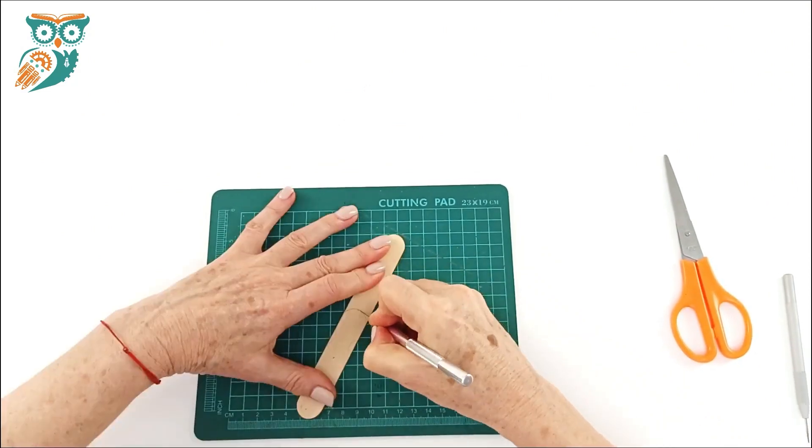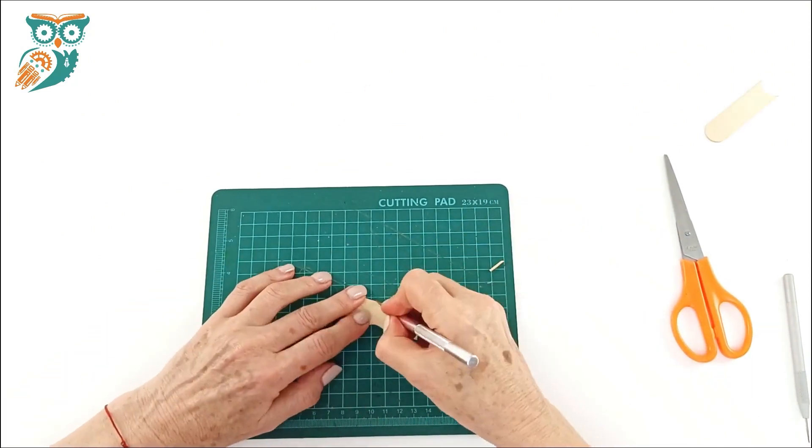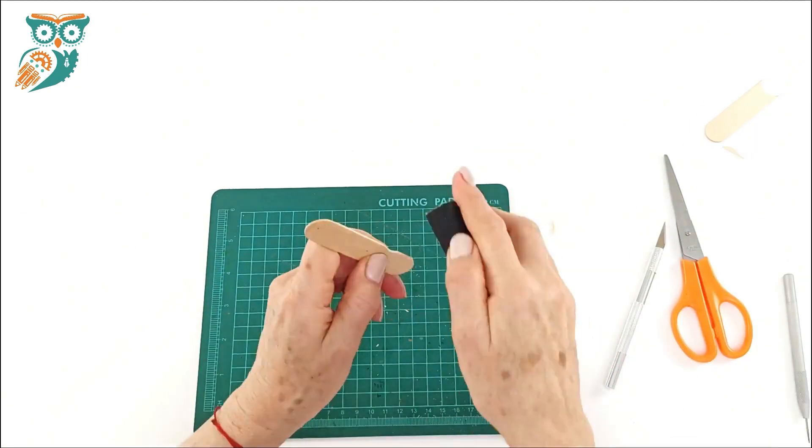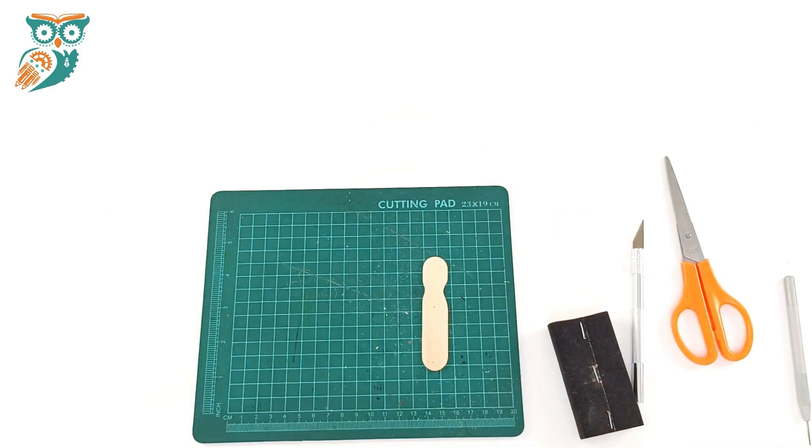We're going to grab a box cutter and very carefully cut out these shapes. If you're working with a younger group of kids that you don't quite trust with the box cutters, you can pre-cut and prepare these pieces.